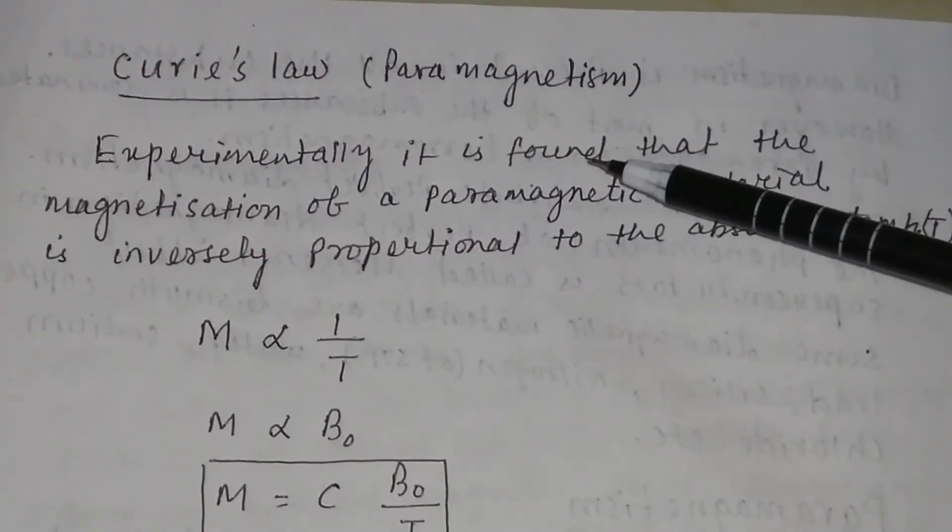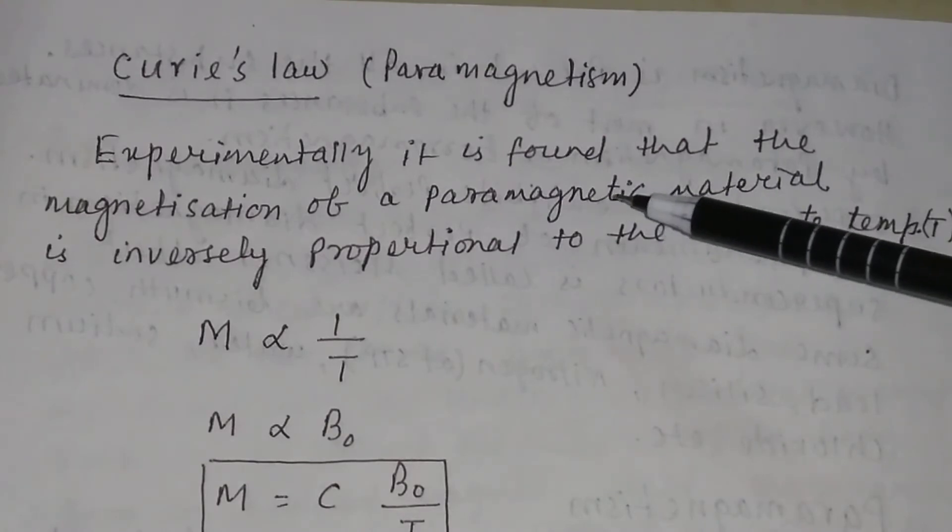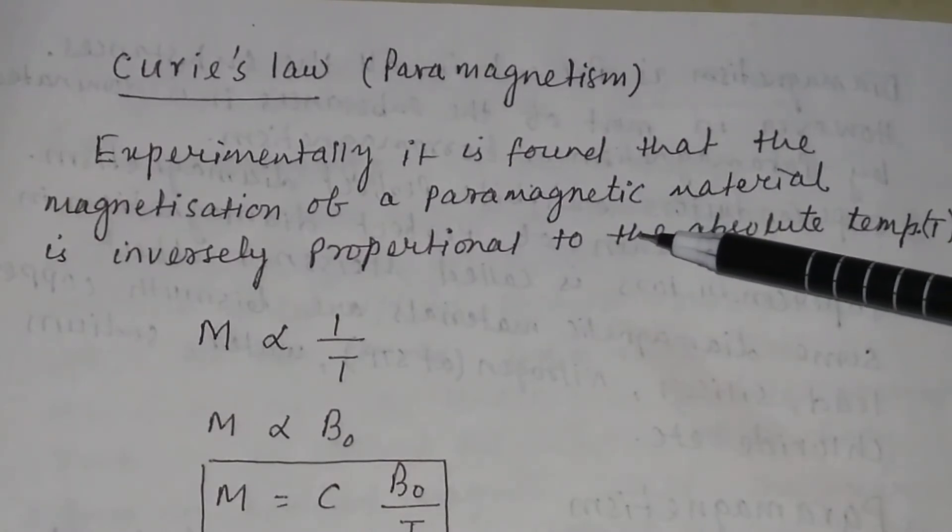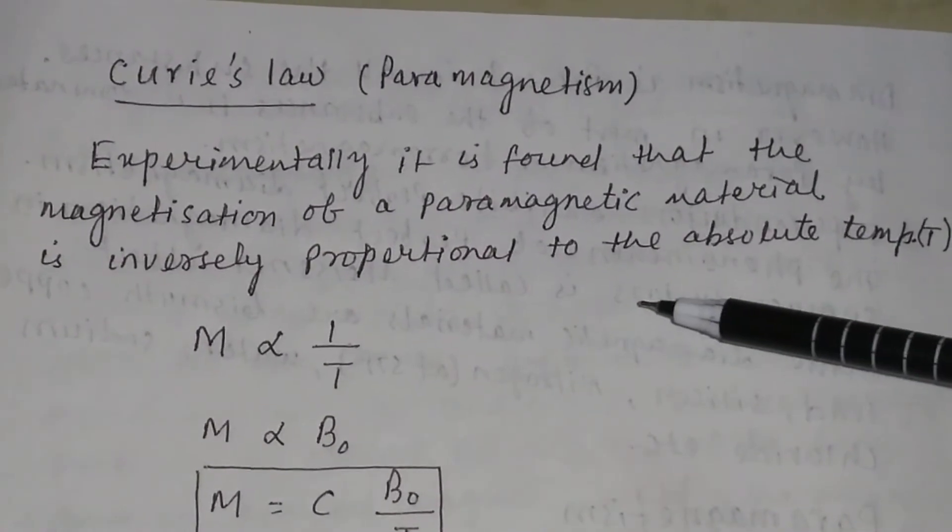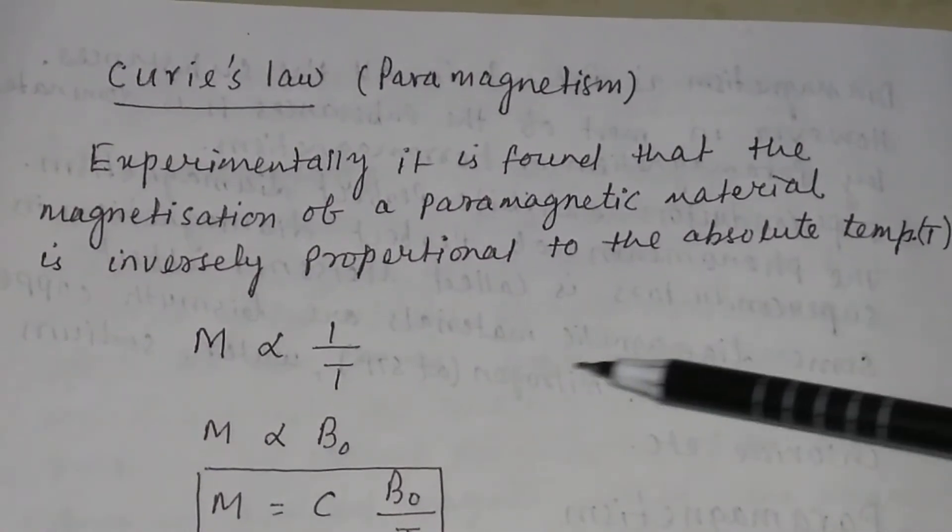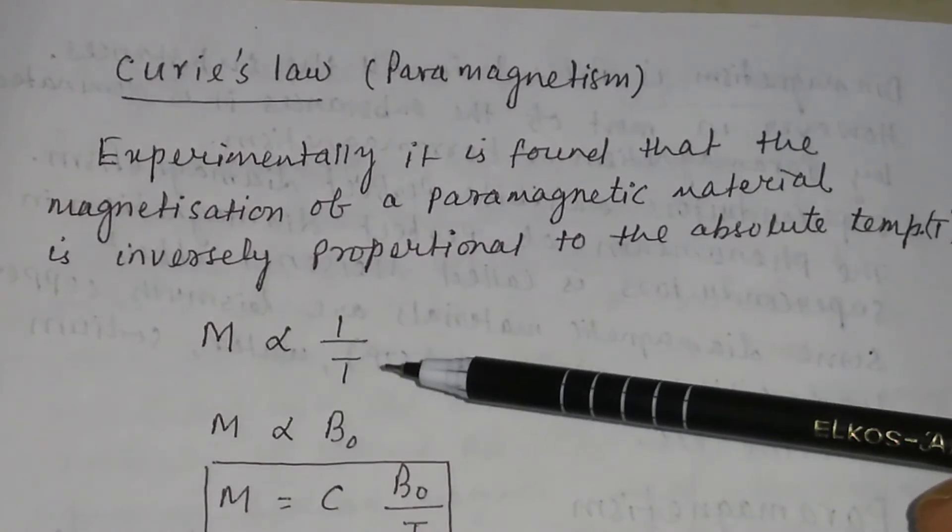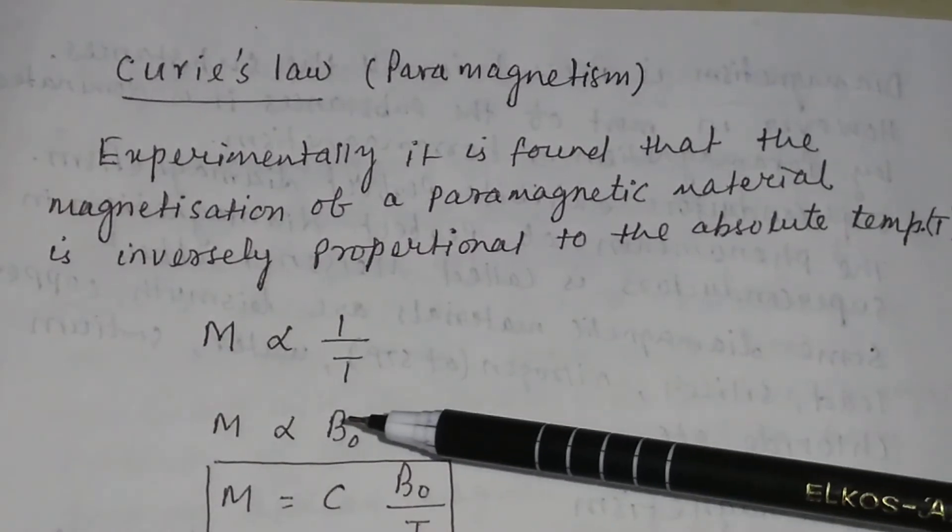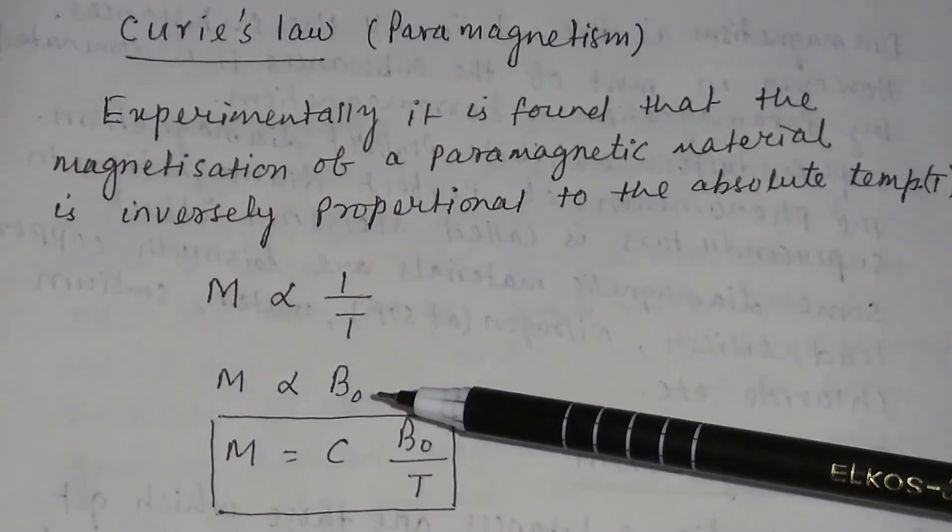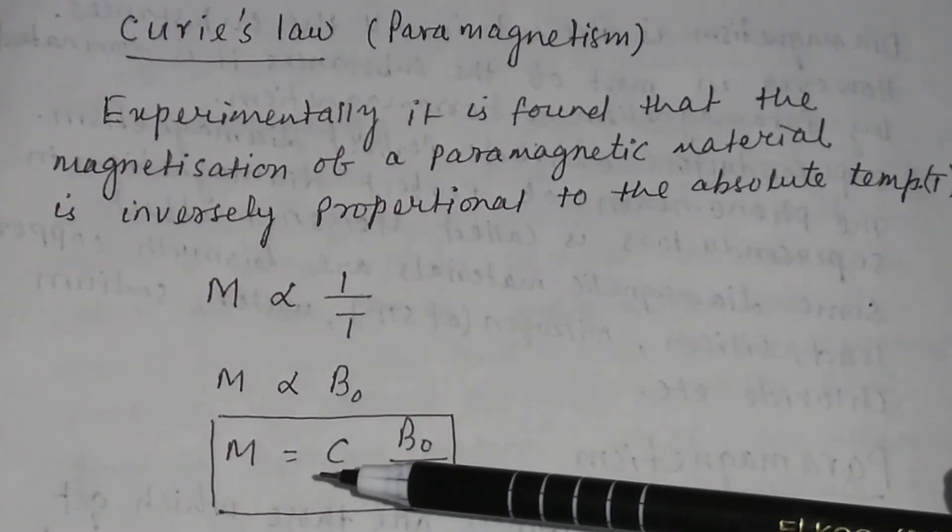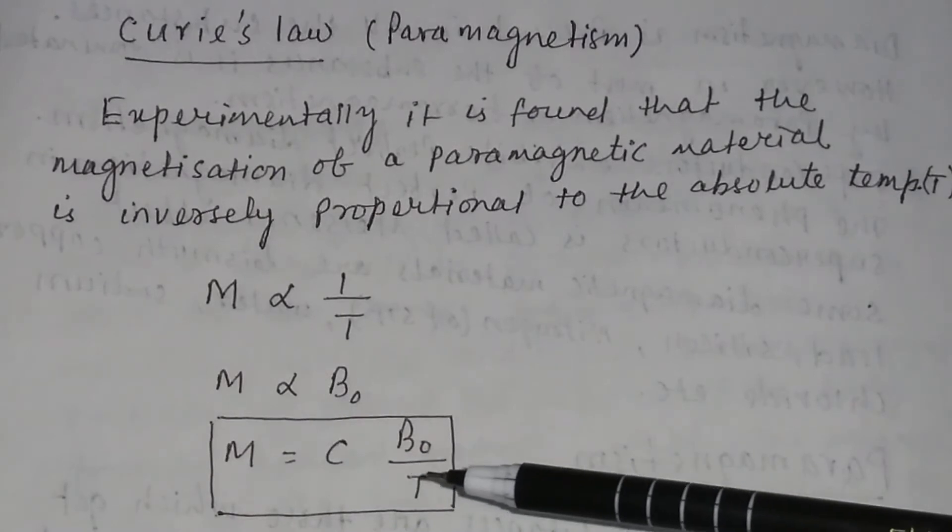Curie Law in Paramagnetism. Experimentally it is found that the magnetization of a paramagnetic material is inversely proportional to the absolute temperature T. That is, magnetization M proportional to 1 by T. And we know the magnetization is proportional to the applied magnetic field B0. So M will be equal to C into B0 divided by T.